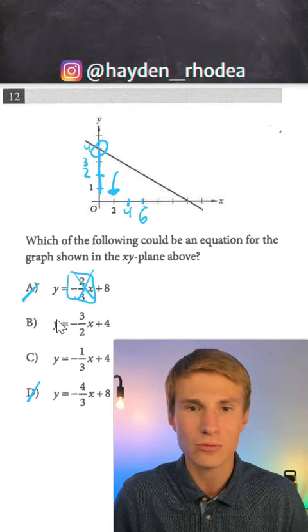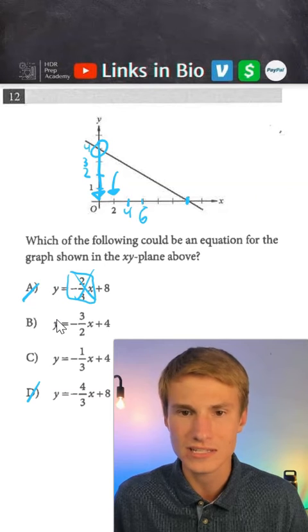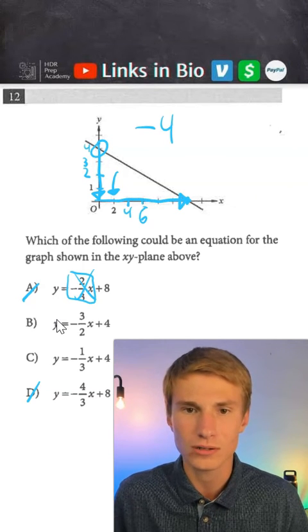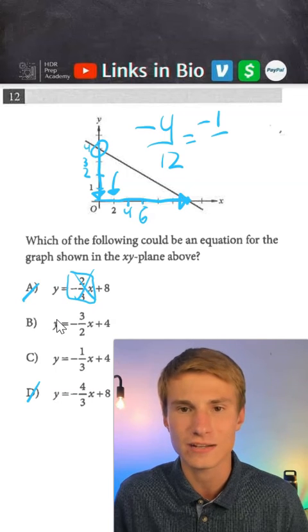Because we can see that if we go down by four from our y-intercept down to zero, we see that we go over by 12. So we're going down four and over 12. So we see our slope's going to be negative four over 12, which we know is the same as negative one-third.